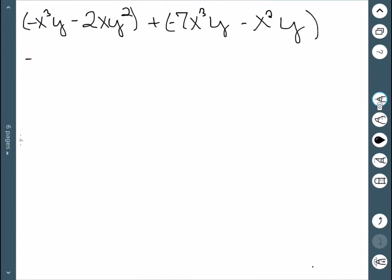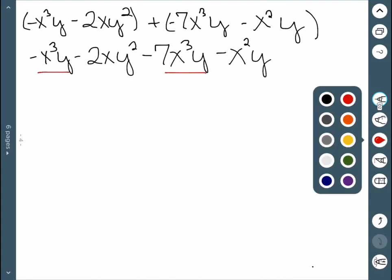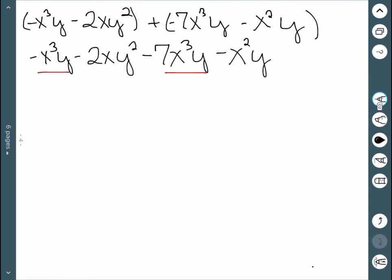Adding will also be pretty similar. The only difference here is we really need to watch our exponents. They need to match perfectly in order to add things. So we can see that we have an x cubed y and an x cubed y. Negative 1 minus 7 is negative 8.